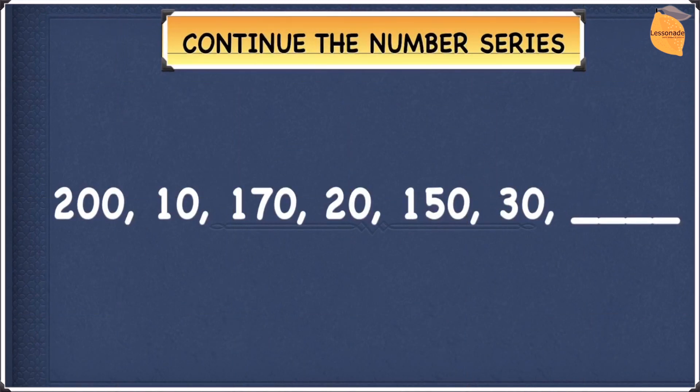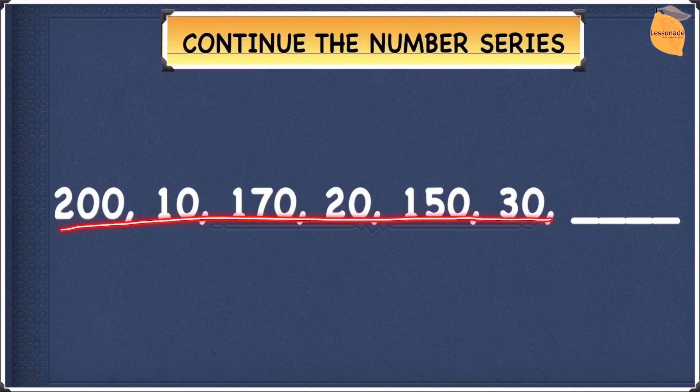This example we have right here is a bit different to the previous one, but nothing too hard. As you can see, this one is a bit longer than the previous one. Also, this series has two different sequences. This is because if this series was to be one sequence, the series would go like this: you go from 200 and then you would suddenly go to 10, from 10 you would go up to 170.